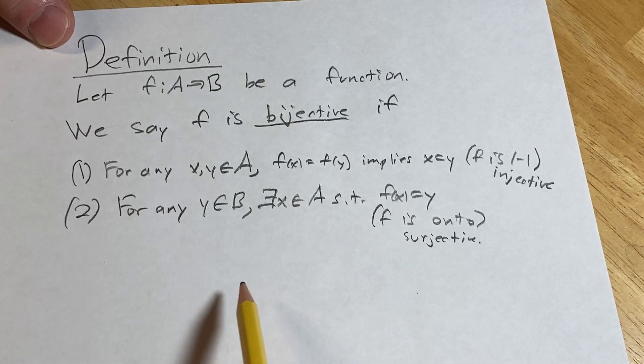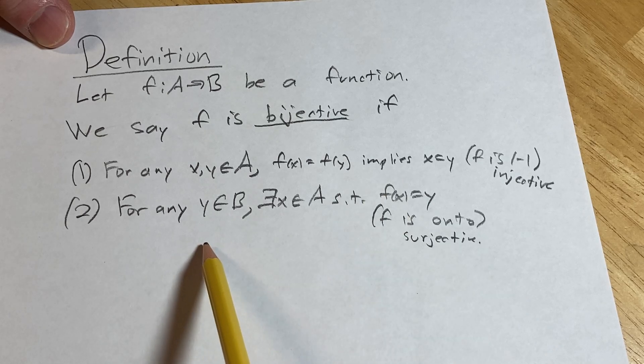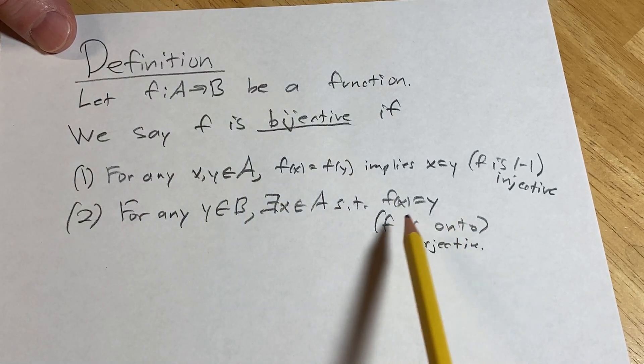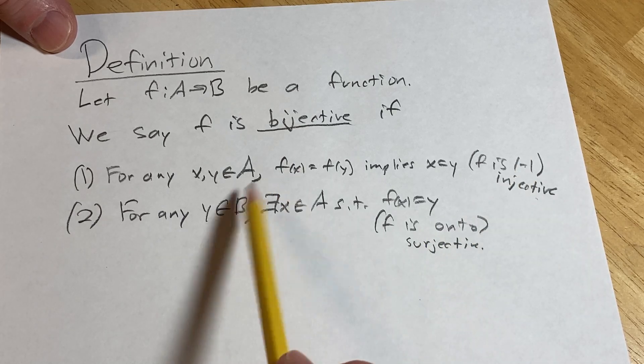Very nice. So we have those two things, and that's it. That's what it means to be bijective. It means it's injective and surjective, or one-to-one and onto, same thing.